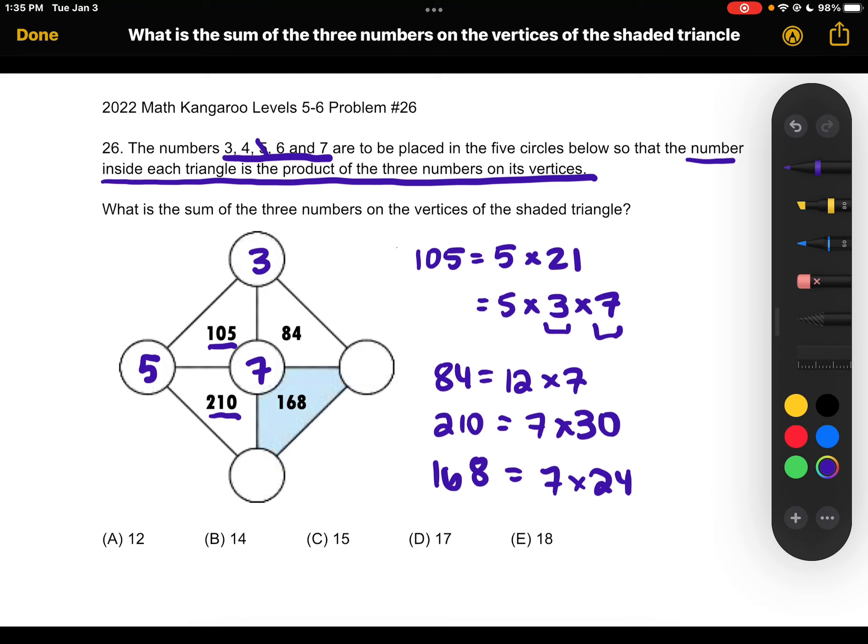Okay, so now let's place the remaining numbers. We've placed 3, 5, and 7. We have 4 and 6 left. So, for example, if we look at 84, 84 is equal to 12 times 7, which is equal to 3 times 4 times 7. We already placed 3 and 7, so 4 must be here.